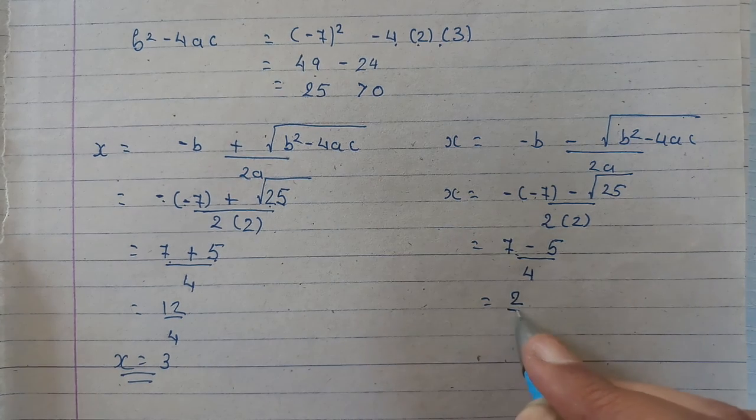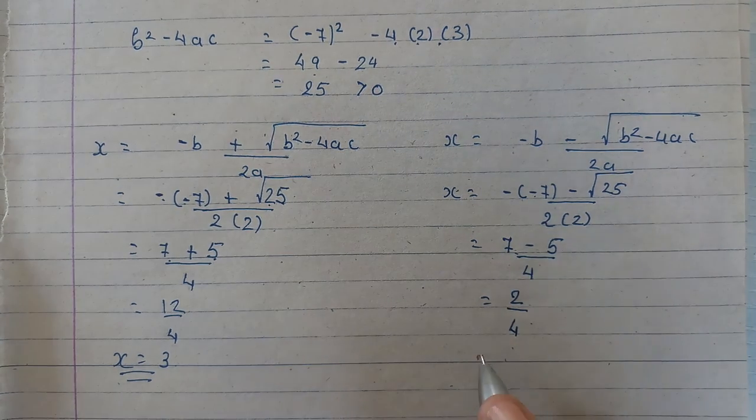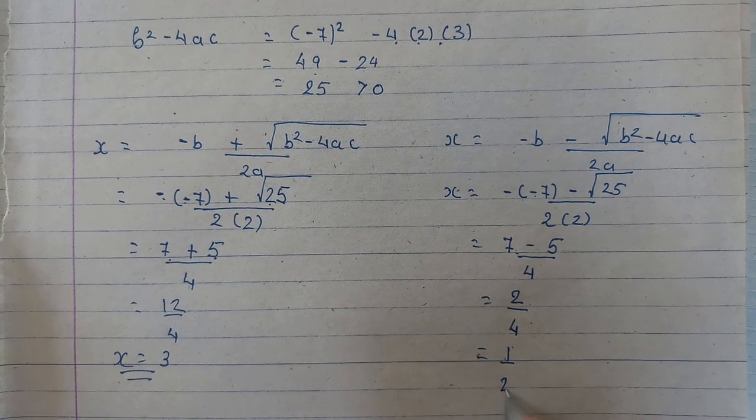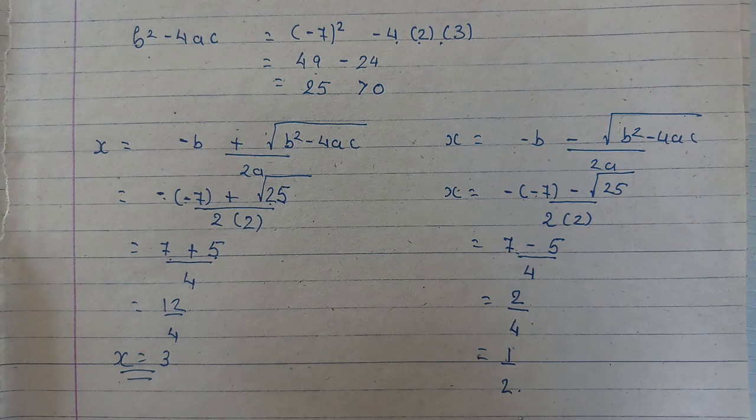7 minus 5 is 2 upon 4. And by solving it, we will have 1 upon 2. Clear?